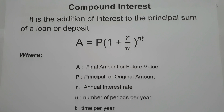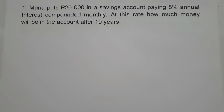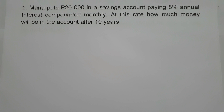Let's start with example number 1. Maria puts 20,000 pesos in a savings account paying 8% annual interest compounded monthly. At this rate, how much money will be in the account after 10 years? Let us identify first the given.